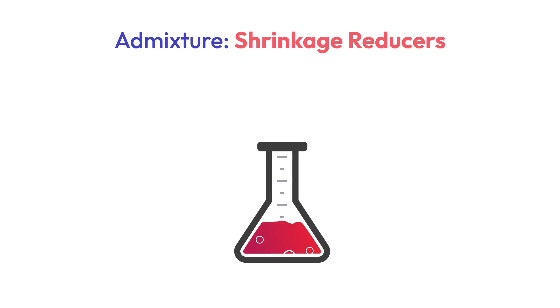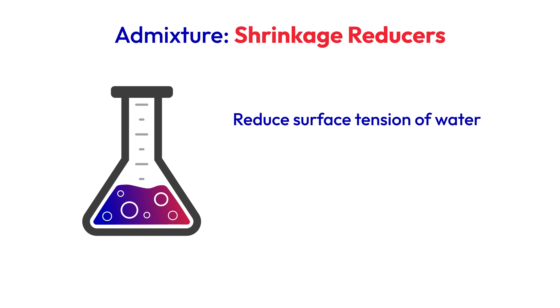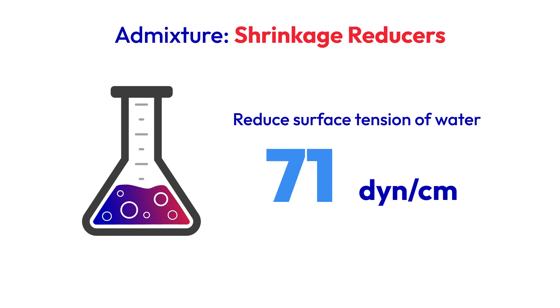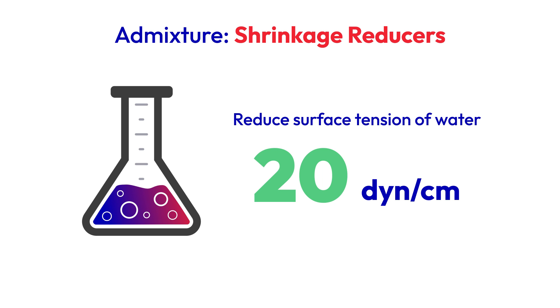Cimex Admixtures has a shrinkage reducing admixture. What this admixture does is it actually reduces the surface tension of water. Water is typically 72 dynes per centimeter — that's a measurement of surface tension. An SRA is going to bring it down to around 20. So while you still are going to lose water, you're not going to get that meniscus pulling on the inside of that pore trying to make everything smaller.